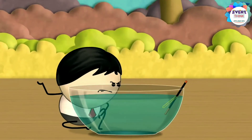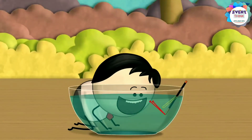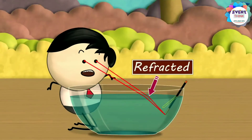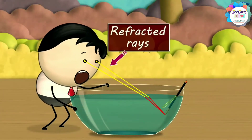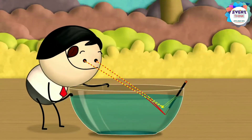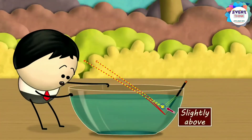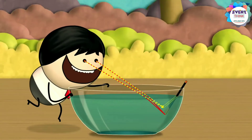When the light rays from the tip of a magic wand pass from water to air, they change their direction — that is, they get refracted. When these refracted rays reach our eyes, our eyes trace them backward as straight lines. Due to this, the rays appear to come from a point slightly above the original position. Hence, the magic wand appears to be bent in water.